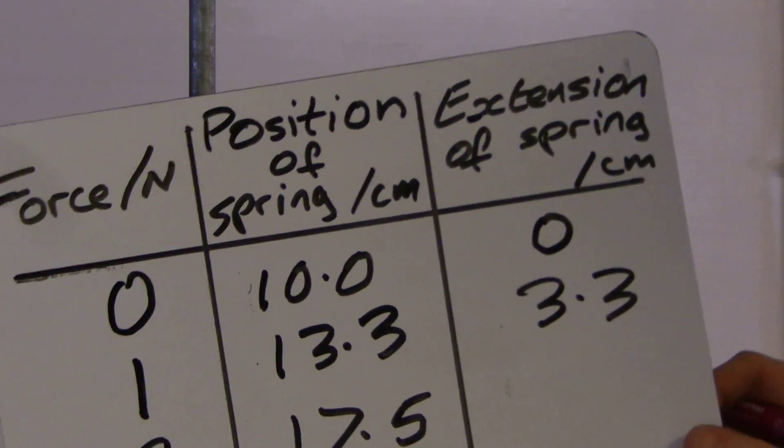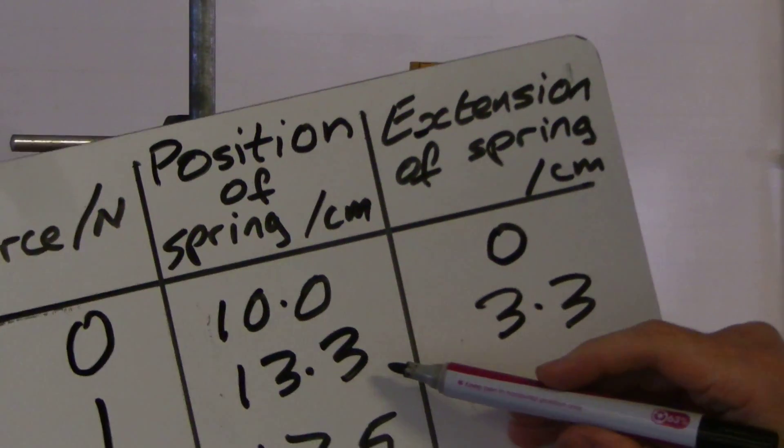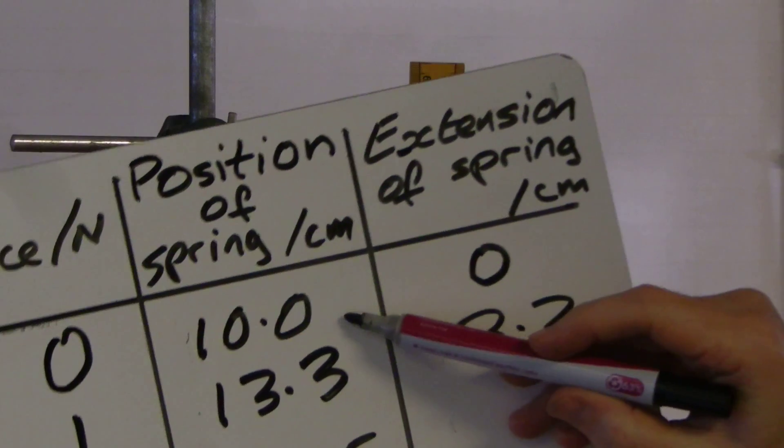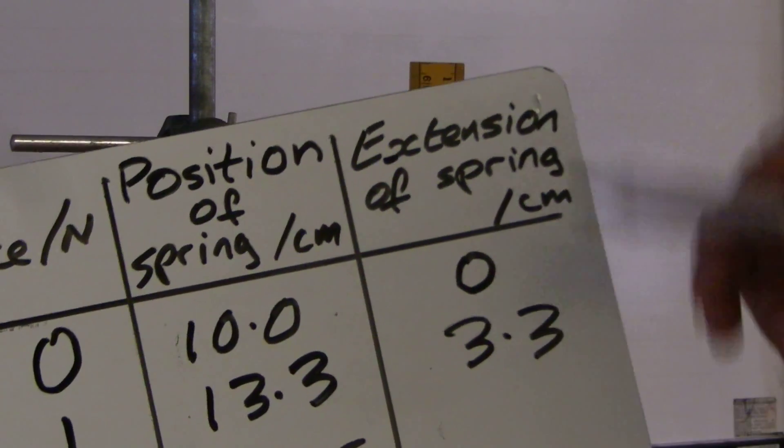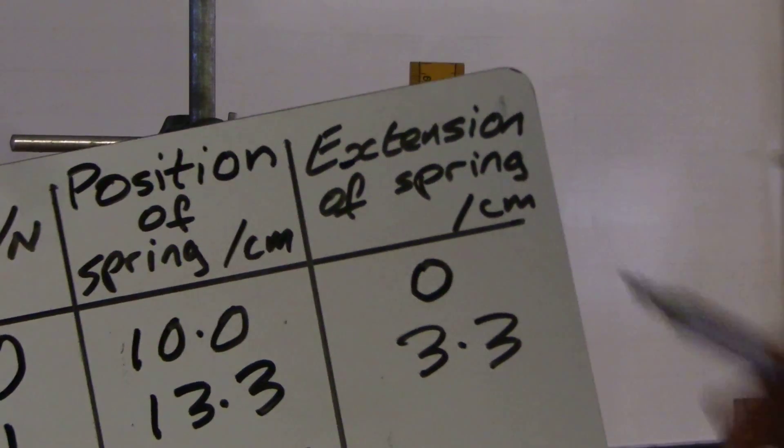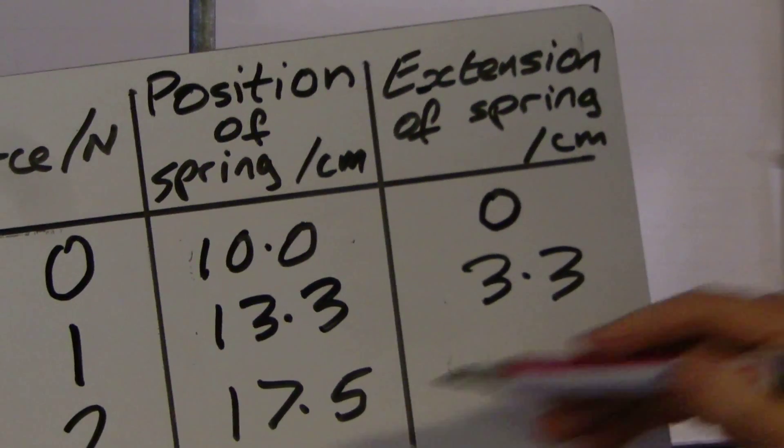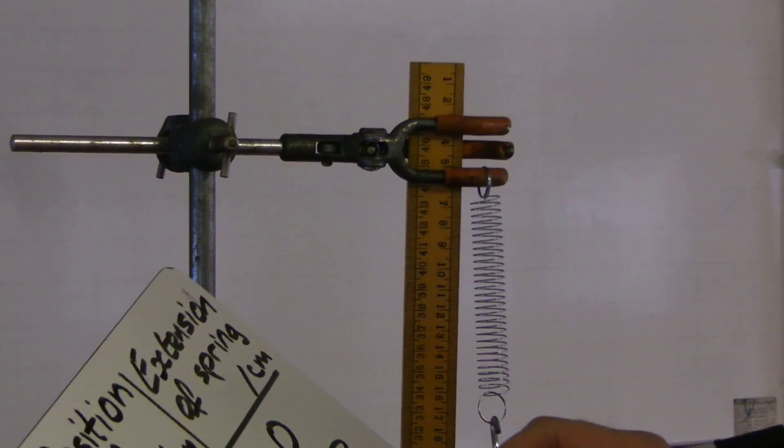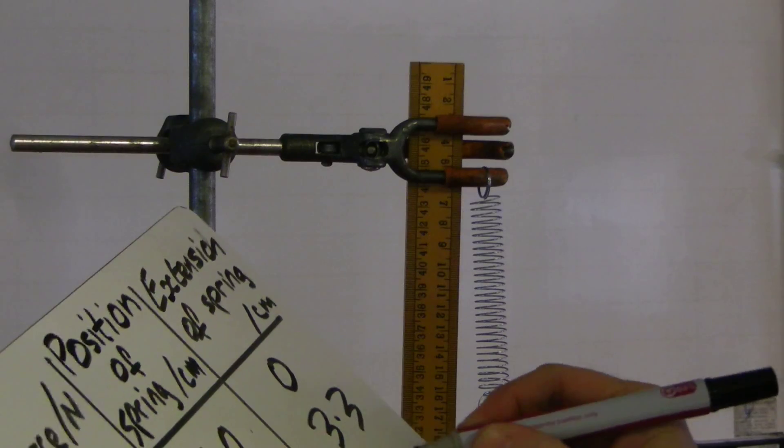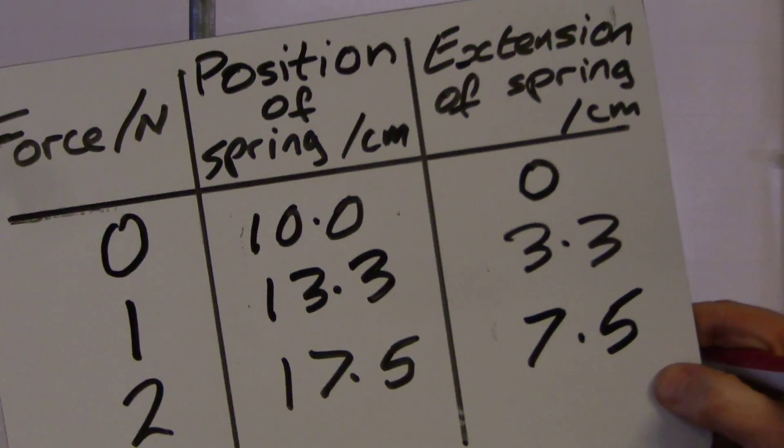Now here's where you might go wrong. I don't want you to take 13.3 away. I want you to take the original position of the spring away. Because I want to know the total stretch at this point. How much the total extension is. So 17.5, take away 10. I can do that in my head. That's why I'm your physics teacher. 7.5 centimetres.